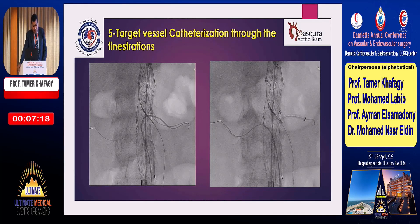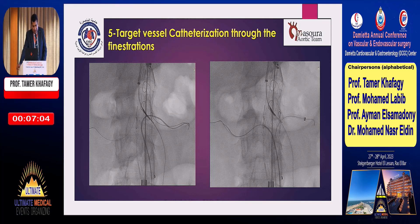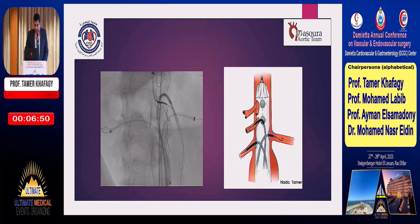Target vessel catheterization is performed through the fenestrations from inside the graft. We pass through the fenestration, advance the wire and catheter, then exchange them for a Rosen wire and high-flex long sheaths placed inside each branch vessel. We catheterize the SMA, right renal, and left renal, but we do not catheterize the celiac artery. This is how it looks with three sheaths inside each branch vessel.